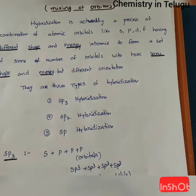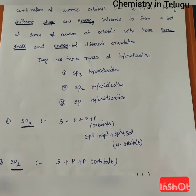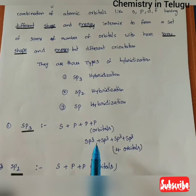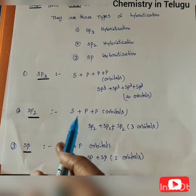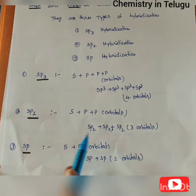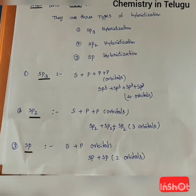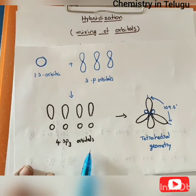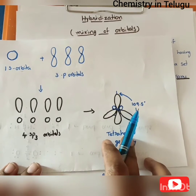Hybridization is mainly of three types: SP3, SP2, and SP hybridization. In SP3 hybridization, 1 S orbital and 3 P orbitals hybridize to form 4 SP3 orbitals. These 4 SP3 orbitals adopt a tetrahedral shape with a bond angle of 109.5 degrees.